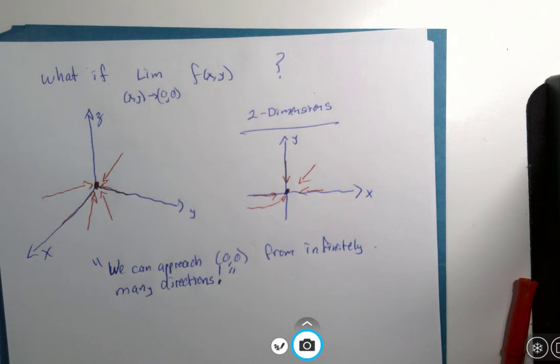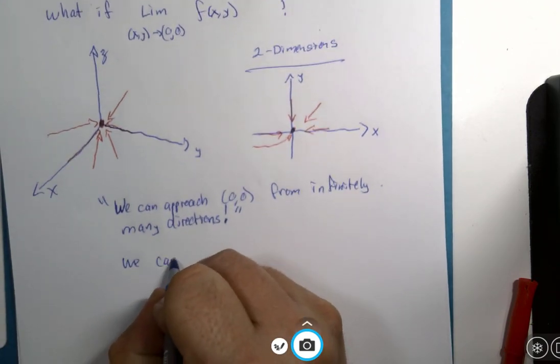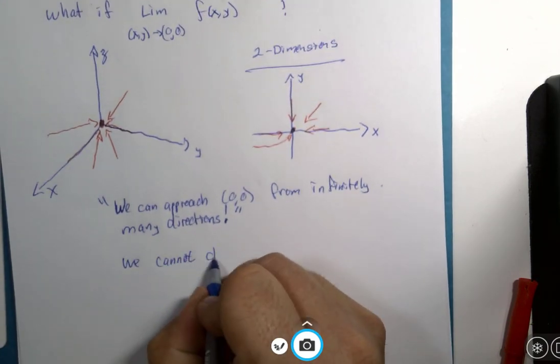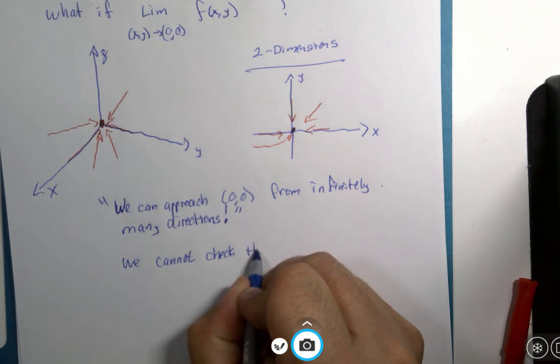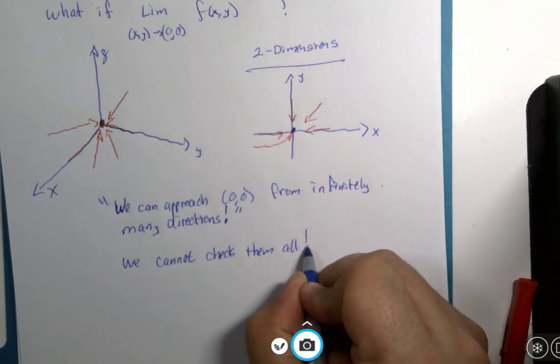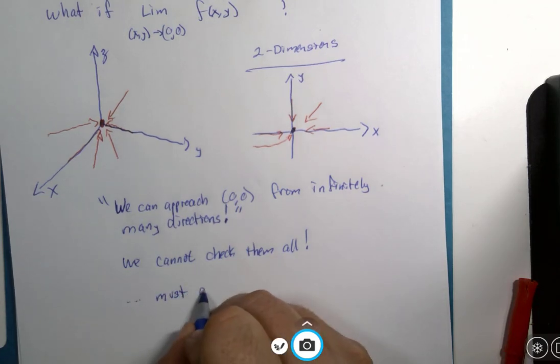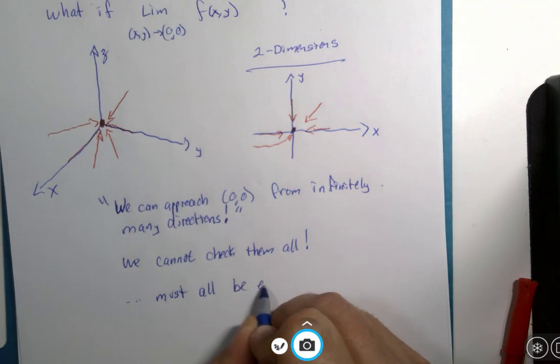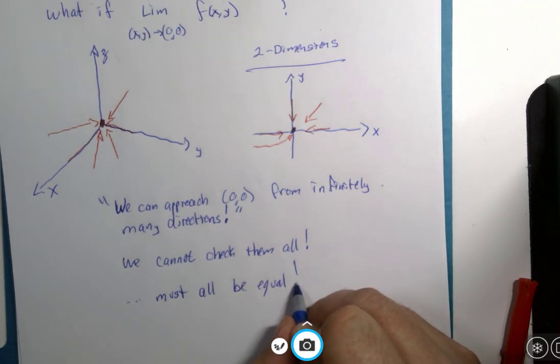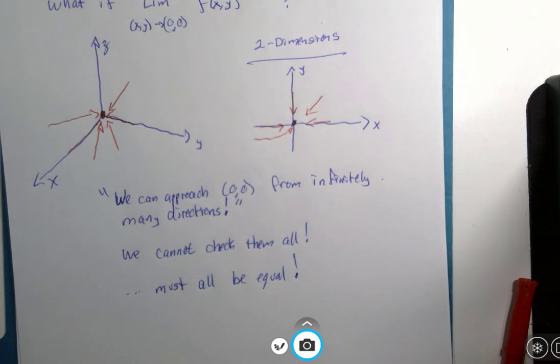I have to deal with infinitely many directions now. Now, we cannot check them all. And they all have to be the same. They must all be equal for this limit to be existing.